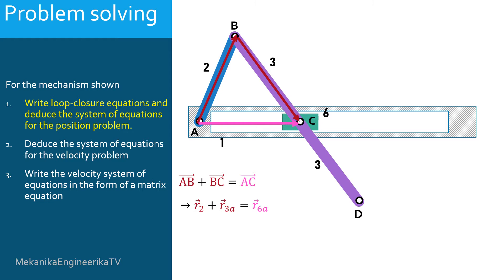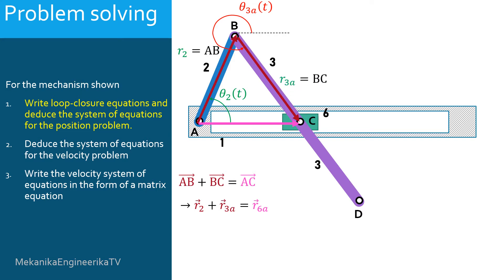For the vector R2, its angle theta 2 depends on time and is defined as shown here. The angle theta 2 is assumed given. The modulus of vector R2 is constant and equal to the distance AB. For the vector R3A, its angle theta 3A depends on time and is an unknown of the position problem. The modulus of vector R3A is constant and equal to the distance BC. For the vector R6A, its angle theta 6A is constant and equal to 0 degrees. The modulus of vector R6A is time dependent and is also an unknown of the position problem.